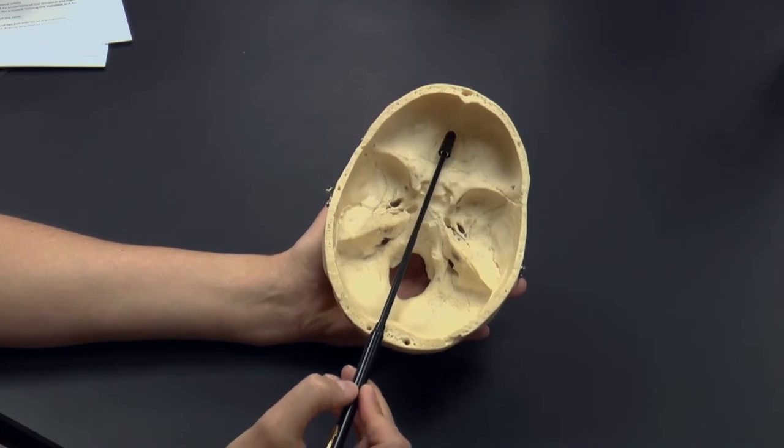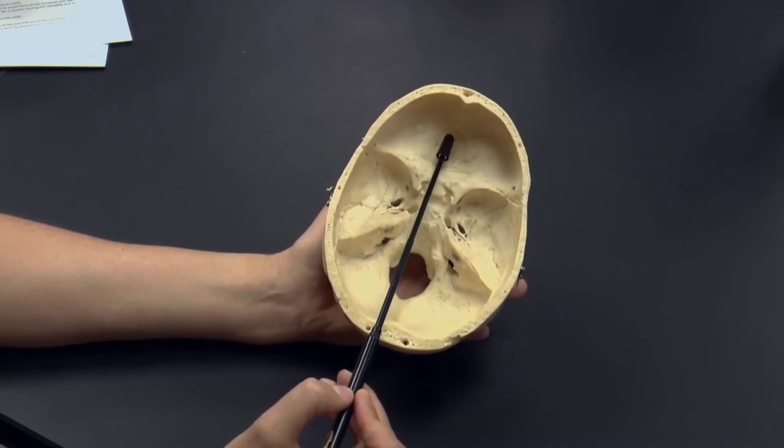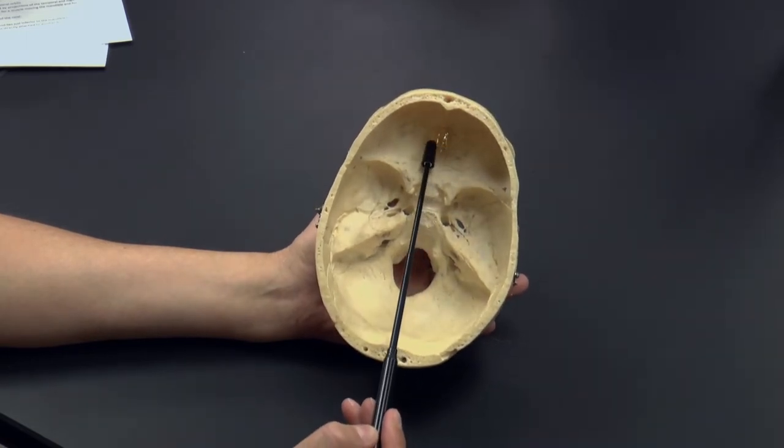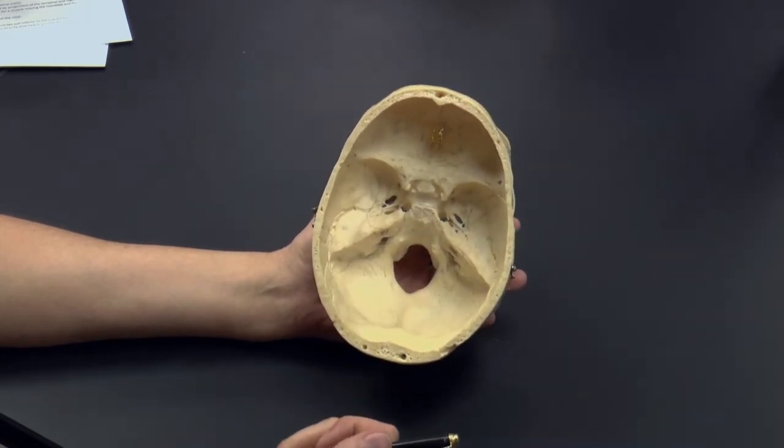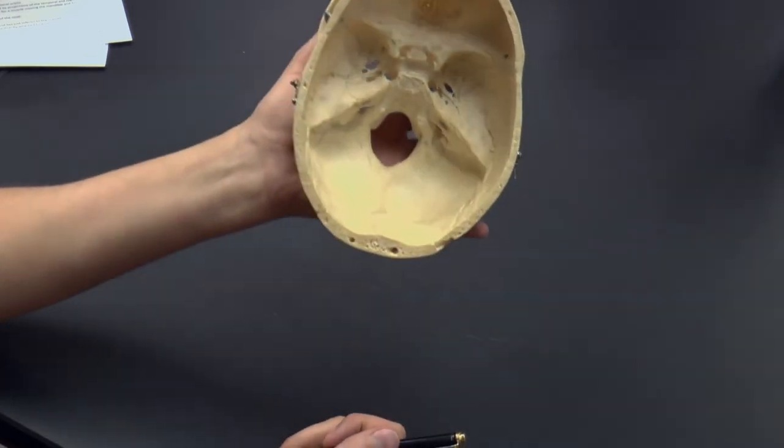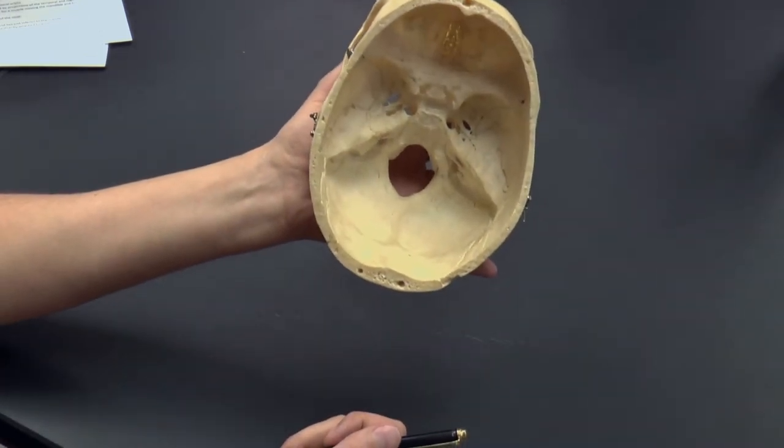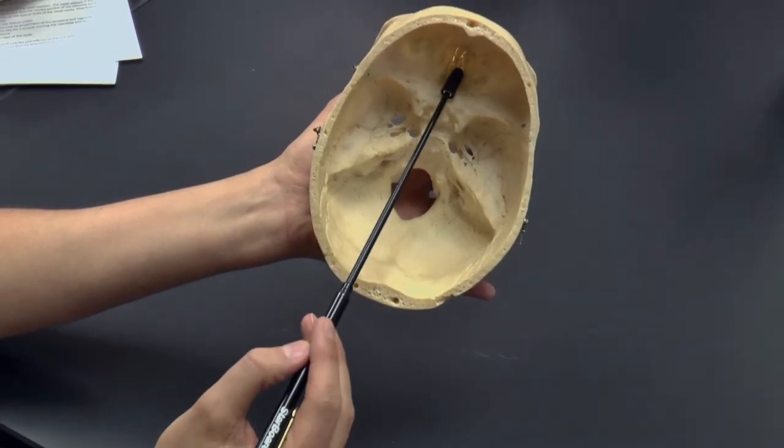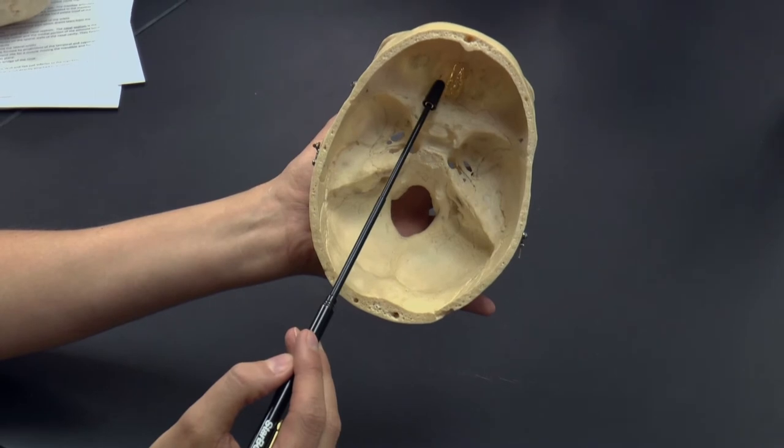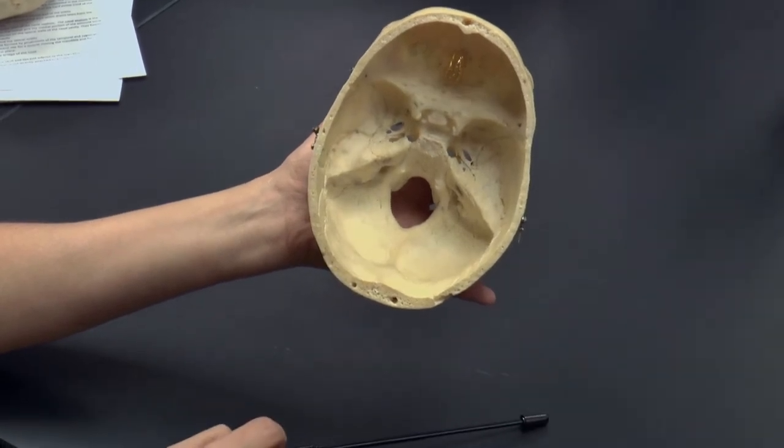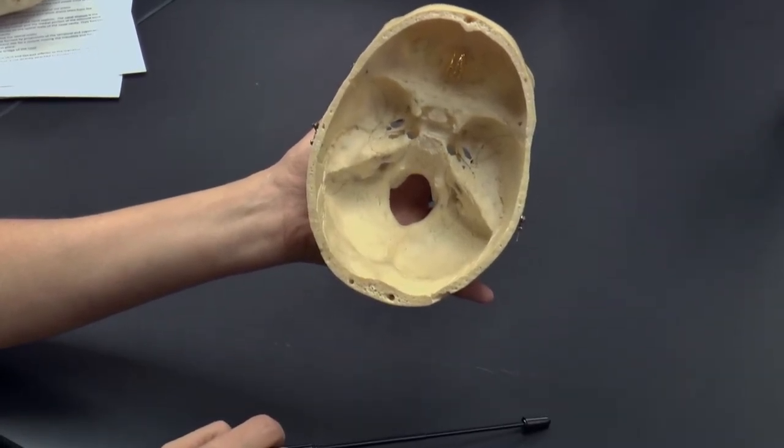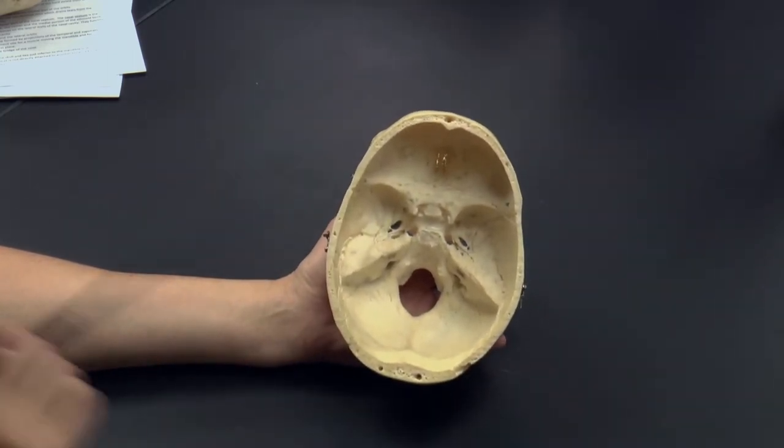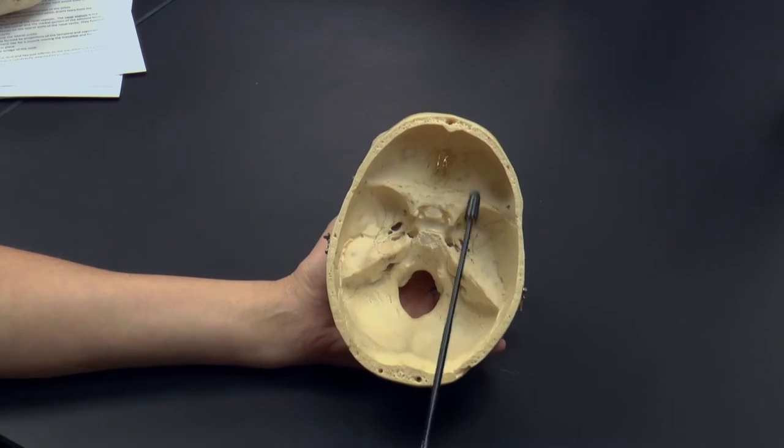One is this little protrusion that sticks up. This is called the crista galli. Surrounding the crista galli is a flat structure that's called the cribriform plate that has these holes in it, called the olfactory foramina. And those olfactory foramina that you can see right here in the cribriform plate on either side of the crista galli, those are holes through which the olfactory nerves will pass through, carrying sensory information, smell information, from the nose, from the nasal cavity to the brain.